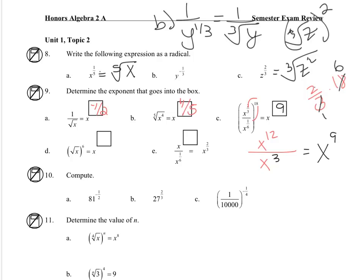So for d, I'm going to change the radical to a 1 half, and now because we have a power to a power, we can multiply, and 1 half times 6 is 3.